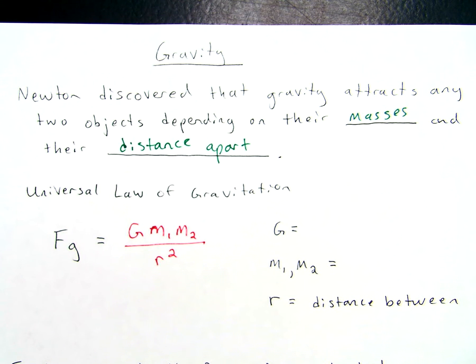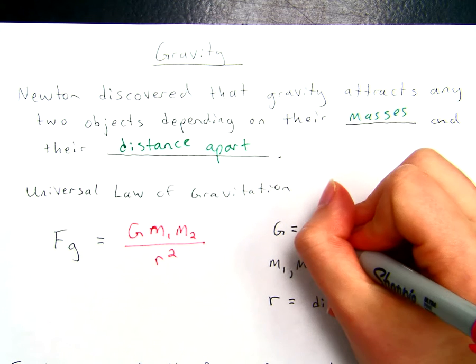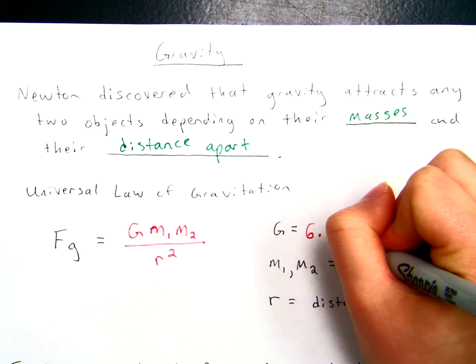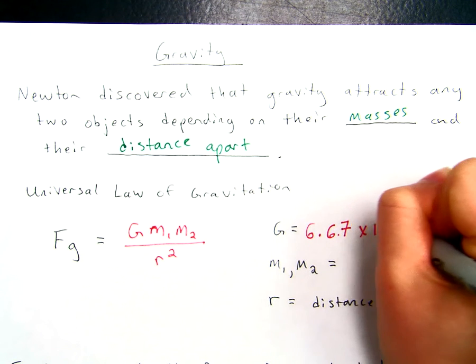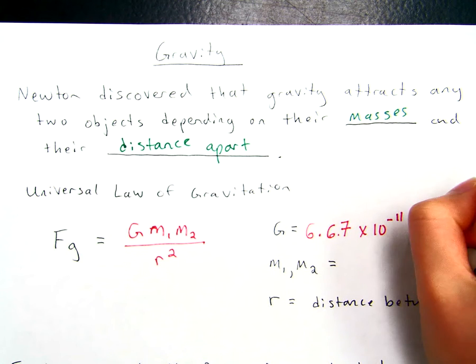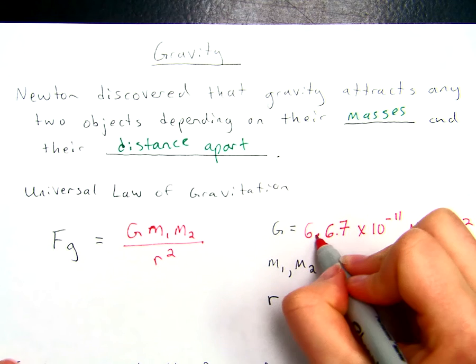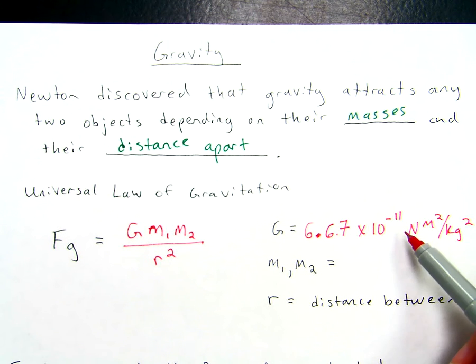It's capital G times m1 times m2 divided by r squared. That's a lot in a very small space. The first thing that we need to know is G. This is a capital G, a constant just like our lowercase g, 9.81, but this g is a much longer number. In fact, it's actually much smaller. It's equal to 6.67 times 10 to the negative 11th Newton meters squared over kilogram squared.